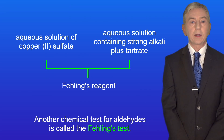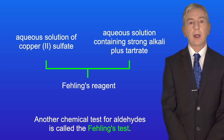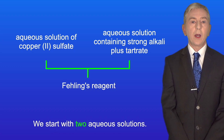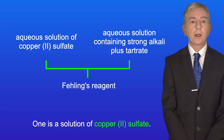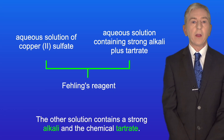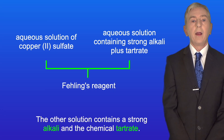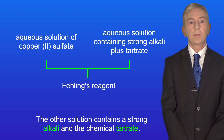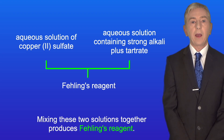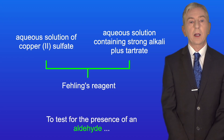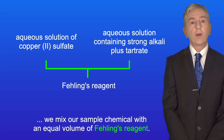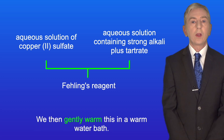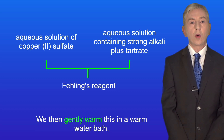Another chemical test for aldehydes is called Fehling's test. We start with two aqueous solutions: one is a solution of copper sulfate, and the other contains a strong alkali and the chemical tartrate. Mixing these two solutions together produces Fehling's reagent. To test for the presence of an aldehyde, we mix our sample chemical with an equal volume of Fehling's reagent, then gently warm it in a warm water bath.